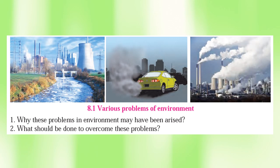Many problems have arisen on the earth due to human interference in nature. Industrialization, increasing population, mining, transportation, and the indiscriminate use of pesticides and fertilizers are causing pollution on the earth.